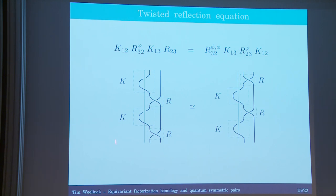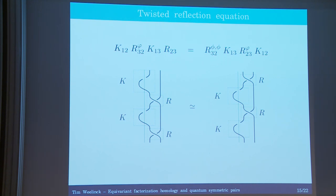If you look at this picture it's not quite clear how to interpret this, and I'm proposing we should look at a different picture. This was a picture of the braid group of the cylinder, which we can think of as the fundamental group of points in a plane, but rather I want to propose we need to look at the fundamental group of points in the orbifold plane.